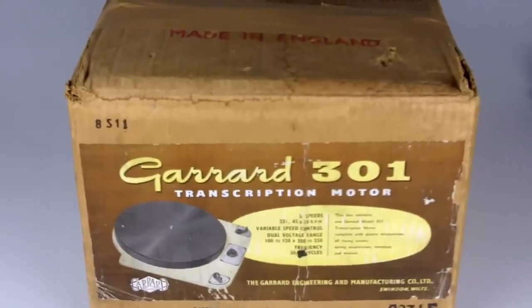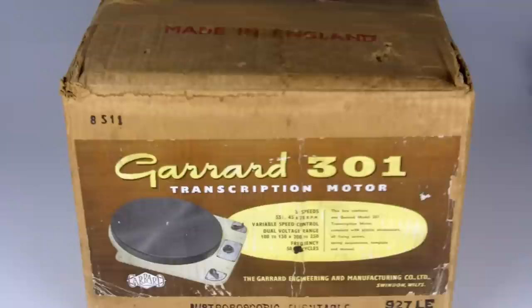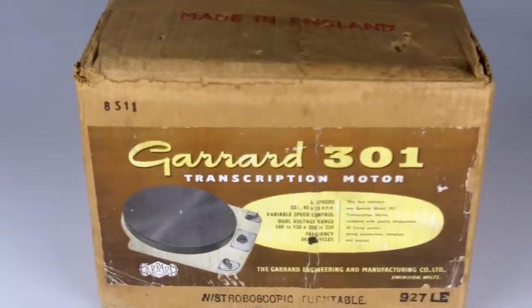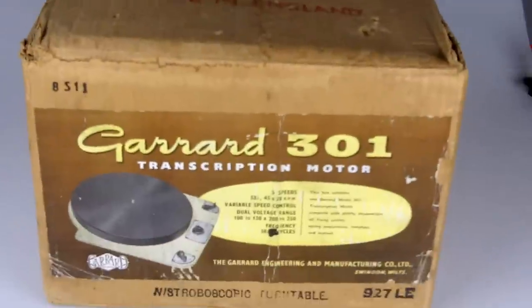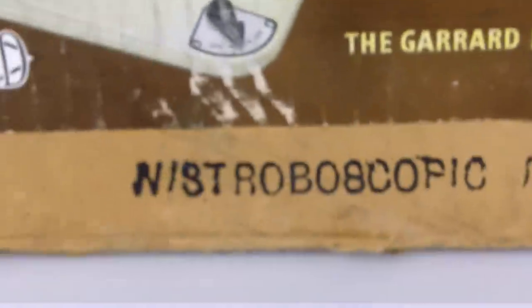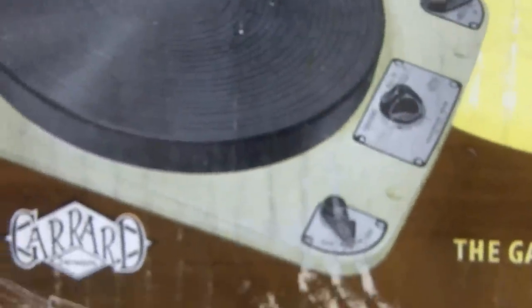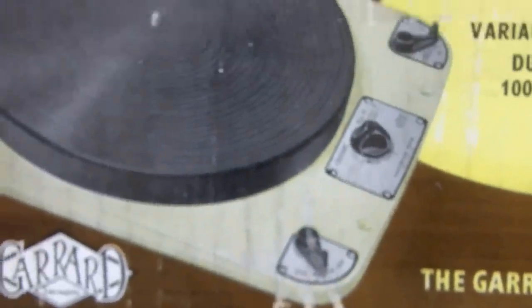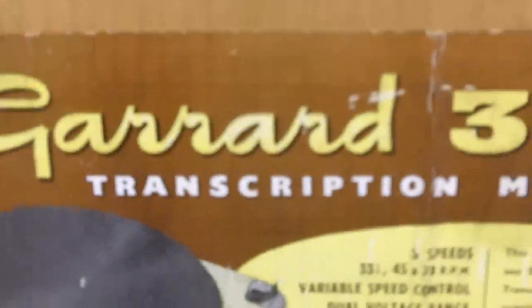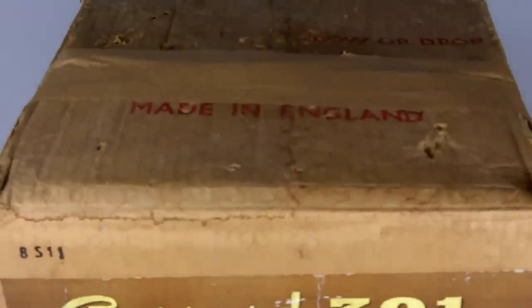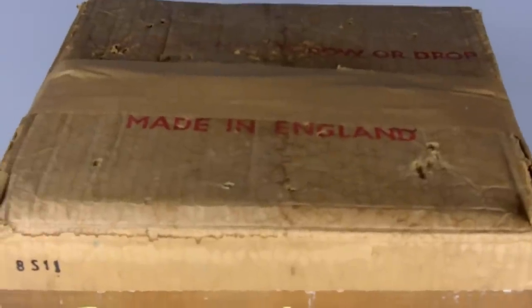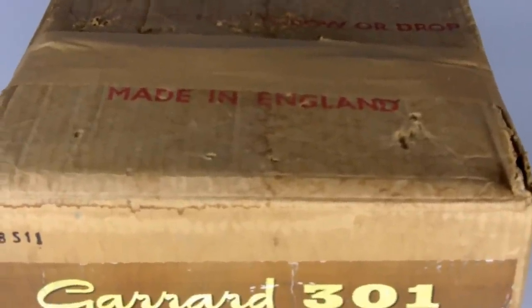Hi and welcome to this Audio Grail film showcasing a new old stock Garrard 301. You'll note from the box, if I zoom in slightly, this is the non-stroboscopic turntable or non-strobe platter as shown in the image on the box. After 50 years the cardboard hasn't done too well, but we're going to open up the box now and see what we can find inside.